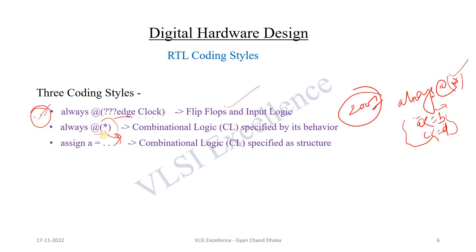The third coding style in Verilog is using assign statements, which are continuous assignment statements. This style is also used to model combinational logic specified structurally. If a combinational circuit is specified by its behavior we can use the always block; if structural behavior or Boolean equations are given, we can use the continuous assignment style to model the combinational logic.